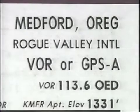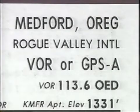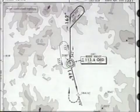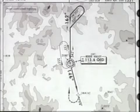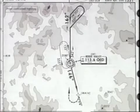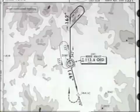Now let's try one a little harder: the VOR GPS Alpha approach to Medford, Oregon. This approach uses a procedure turn, a combined initial and final approach fix, and a missed approach hold at the final approach fix.